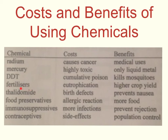Fertilisers are another example. The obvious benefit is that we can use them on plants and crops to increase yield. The problem arises when the chemicals get into the waterways, causing eutrophication, where algal blooms are formed and can cause serious problems in waterways for the environment.